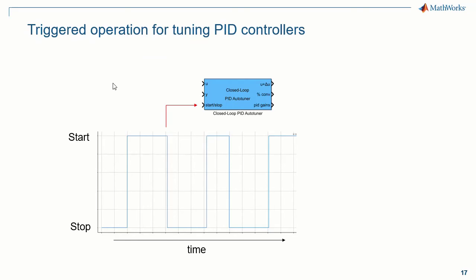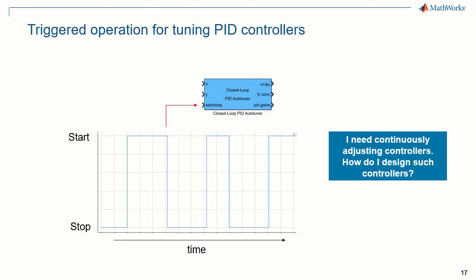I want to reiterate the operating principle of this PID Auto Tuner block: it requires a manual trigger every time you need to tune or retune your PID gains. But you might be trying to design a controller that can automatically and continuously adjust its controller parameters during the operation of the system, without requiring manual triggering. So, how would you go about designing such controllers?